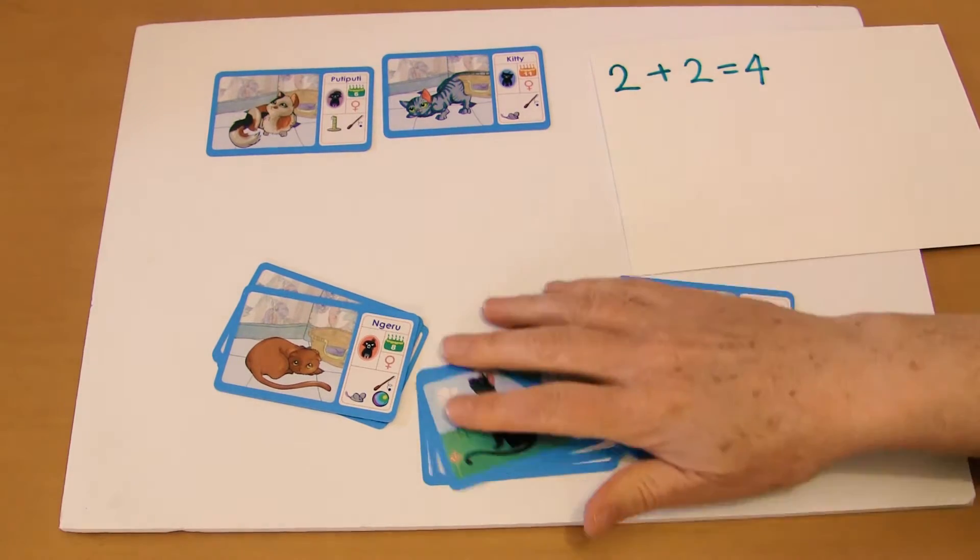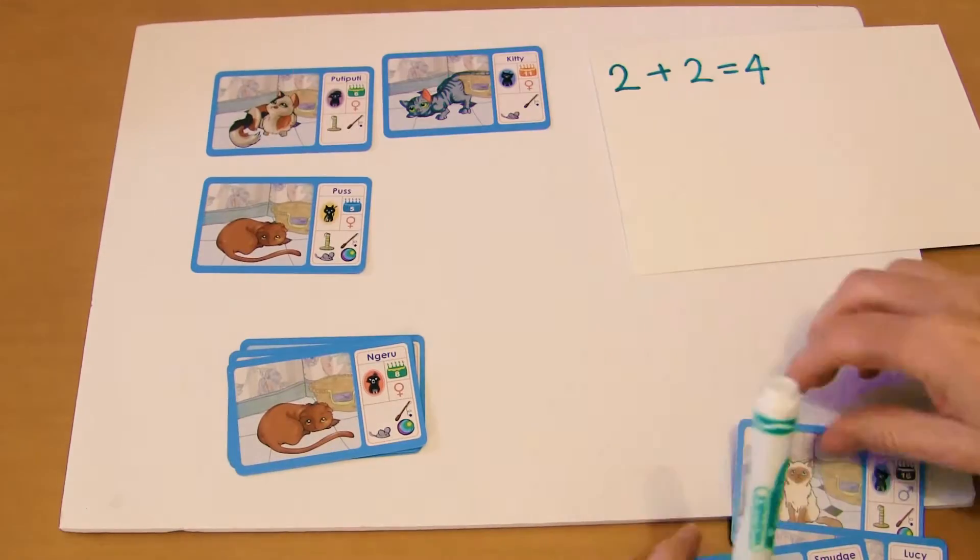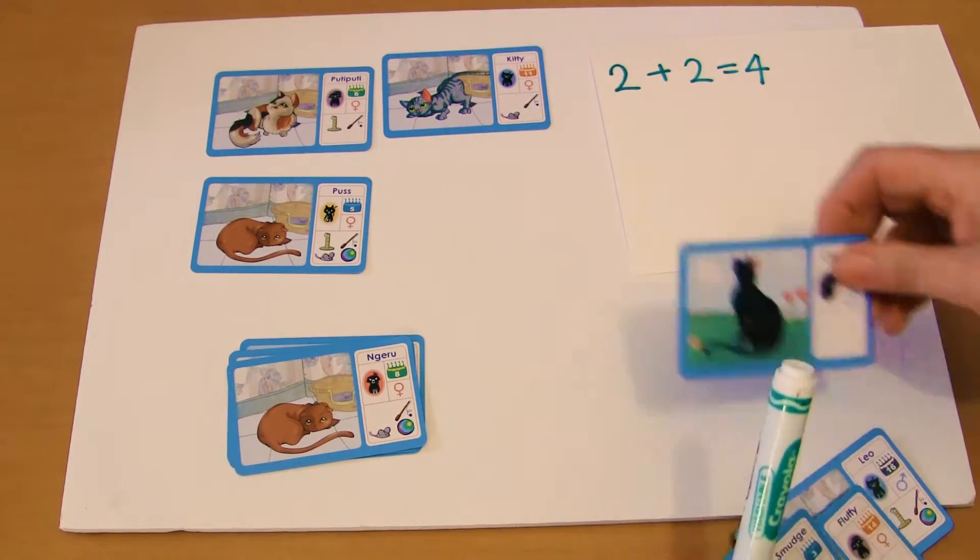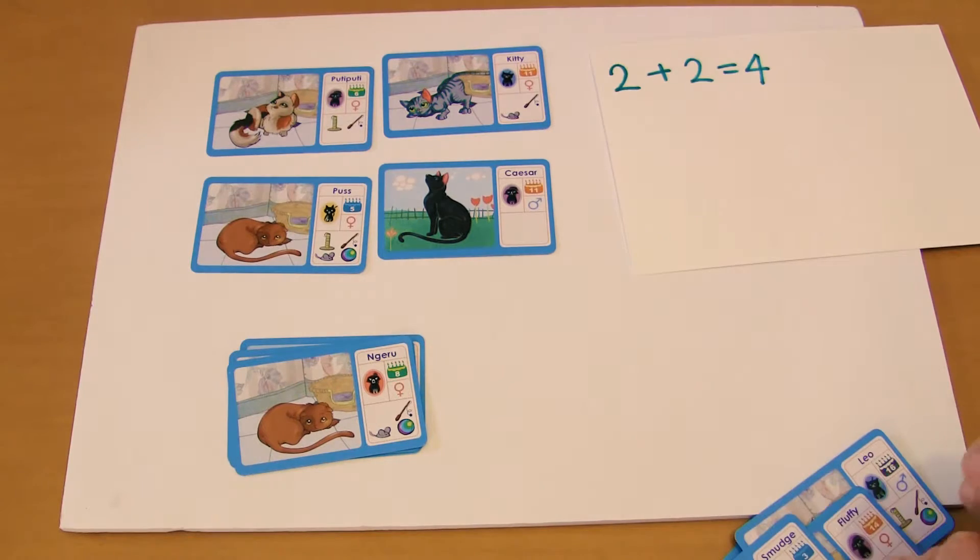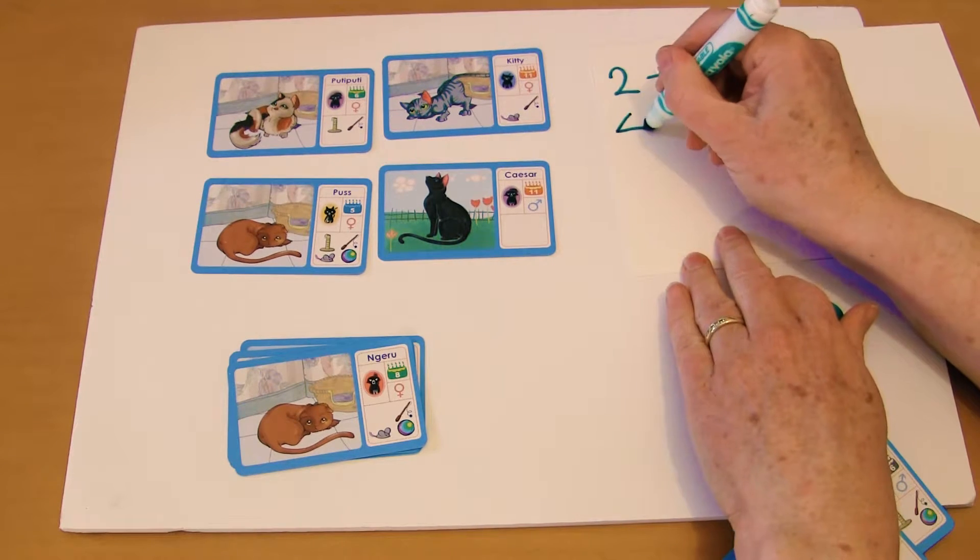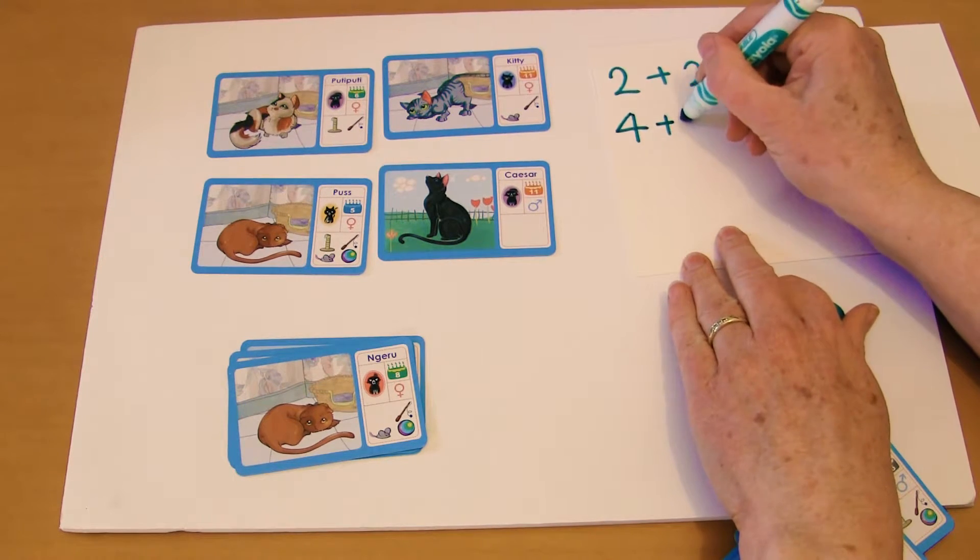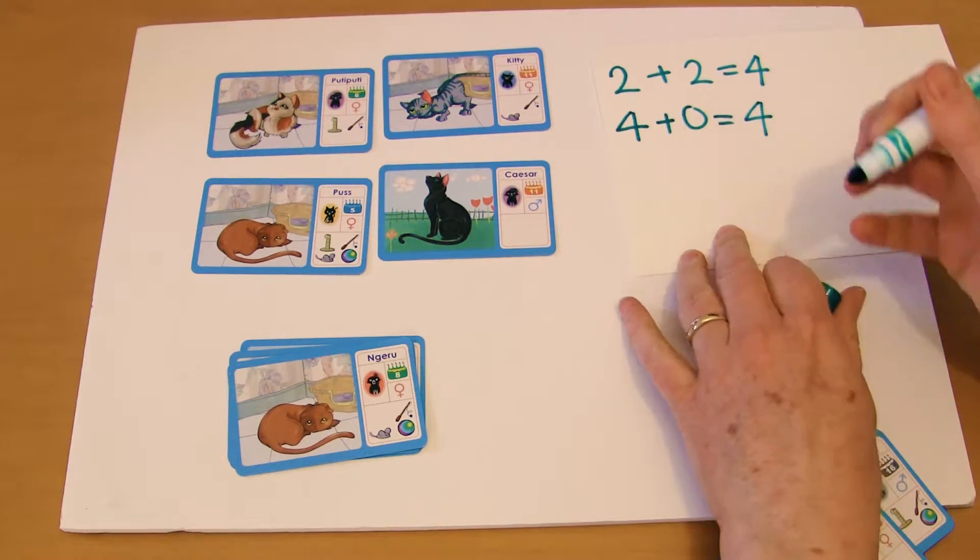And somebody else might think, well I've just got that one there who's got four toys, but you could add in Caesar here who's got zero. So you could have 4 plus 0 equals 4 toys.